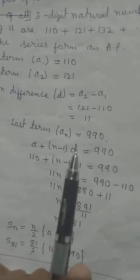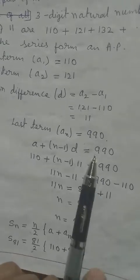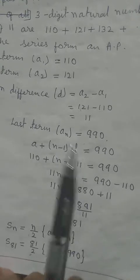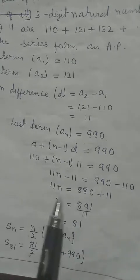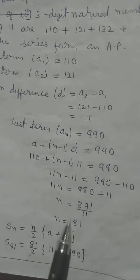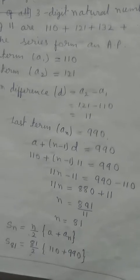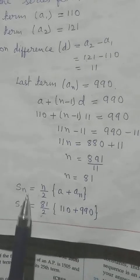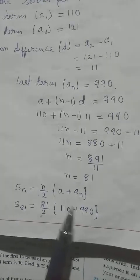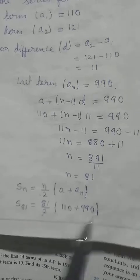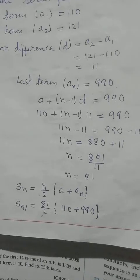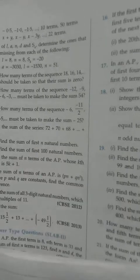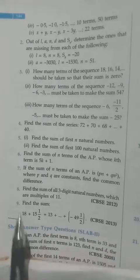Using A_N = A + (N−1)D: 990 = 110 + (N−1)(11). Transferring: (N−1)(11) = 880, so N − 1 = 80, N = 81. There are 81 three-digit multiples of 11. Using the second S_N formula: S_N = N/2 × (A + A_N) = 81/2 × (110 + 990) = 81/2 × 1100 = 81 × 550 = 44,550.